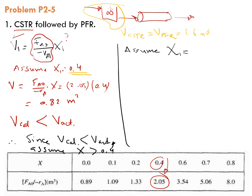Now let's assume X_1 equals 0.6. Let's calculate V again. We have 0.6, which corresponds to F_A0 over minus r_A, so that is multiplied by 3.54, and this shall give you a value of 2.124 cubic meters.